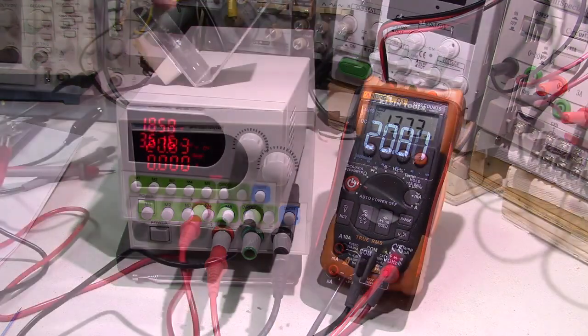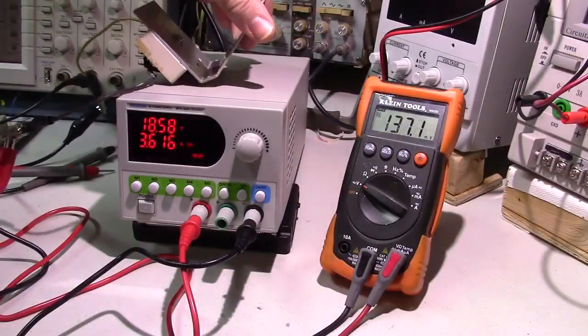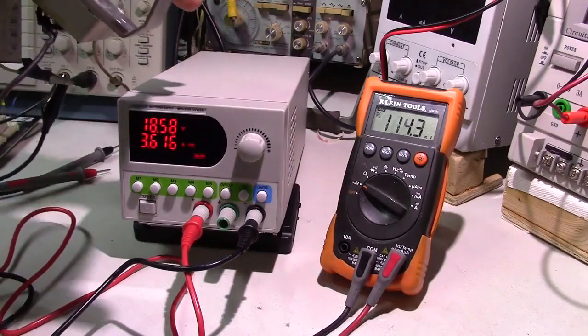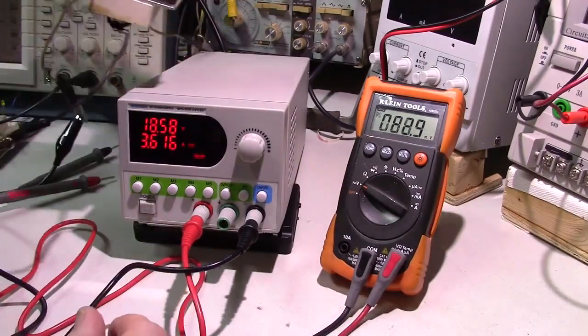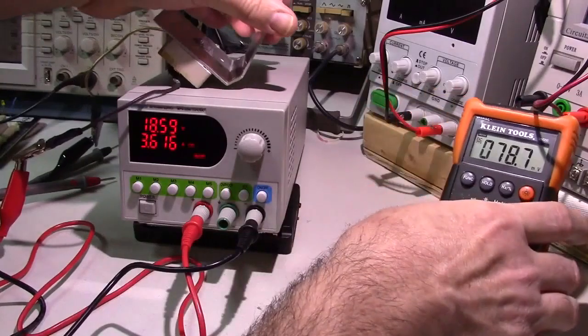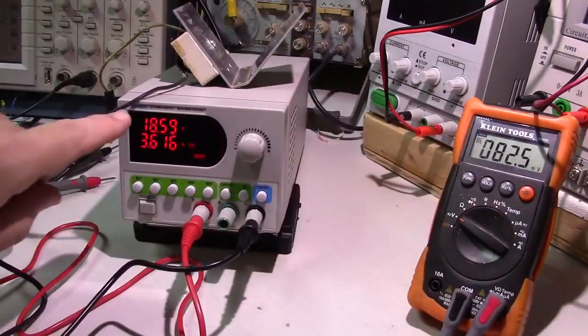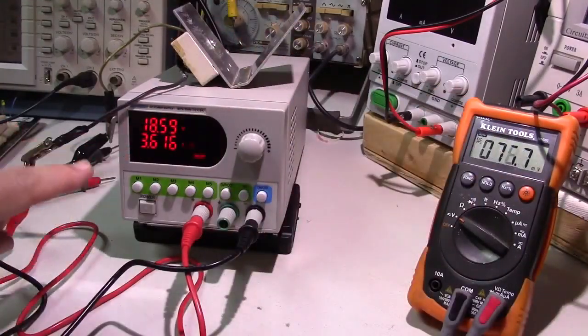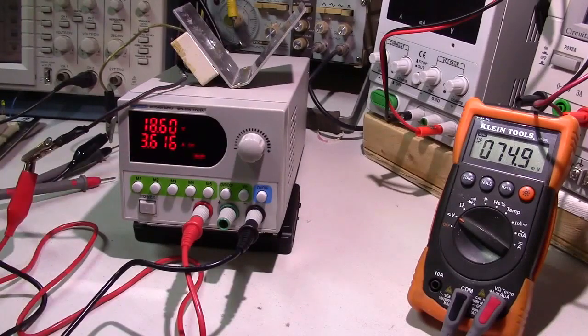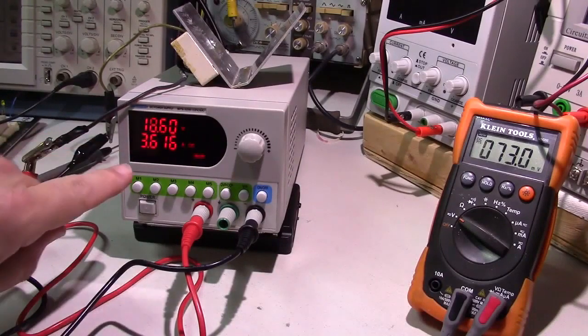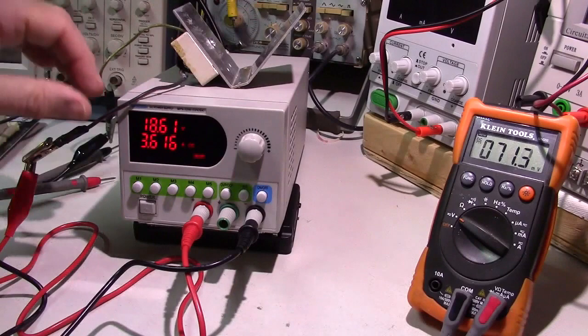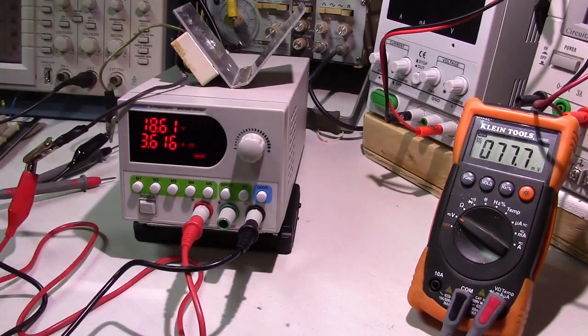Now I have the resistive load on here, right across the terminals, and no longer measuring the voltage. You can see 18.59 volts at 3.6 amps—that is the current going through. This is heating up right now. If I multiply that, that's about 64 watts going through this resistor.